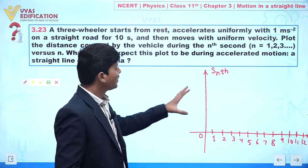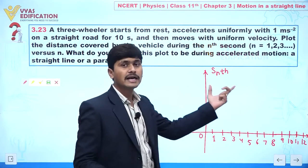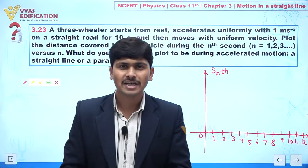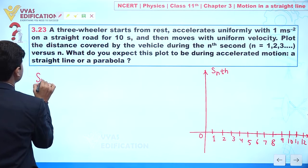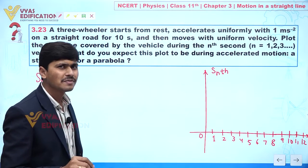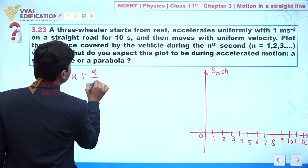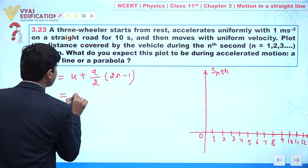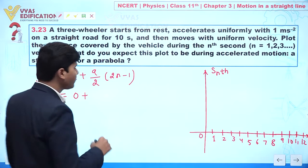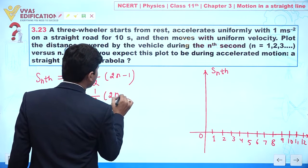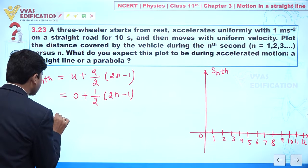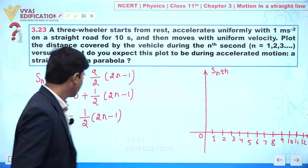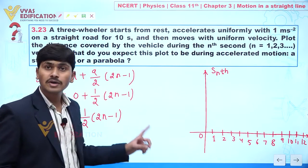The formula for distance covered in the nth second is Sₙ = u + (a/2)(2n − 1). Since the three-wheeler starts from rest, initial velocity u = 0 and acceleration a = 1. So Sₙ = ½(2n − 1).